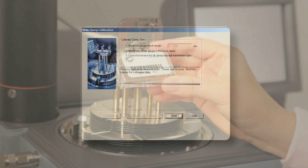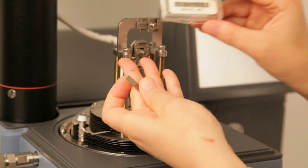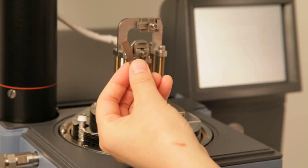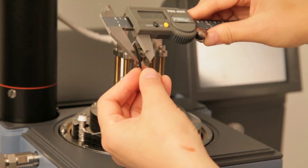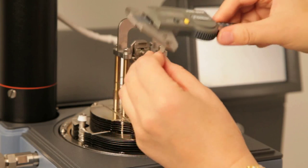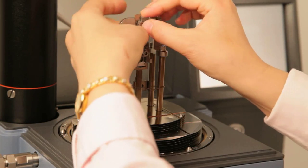For clamp compliance calibration, take the compliance calibration steel shim from the clamp kit. Use the caliper to measure its width and thickness. Then load it to the tension clamp.